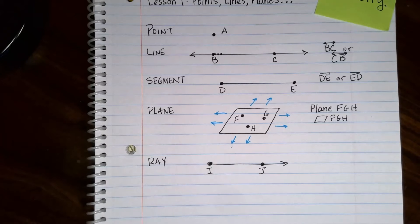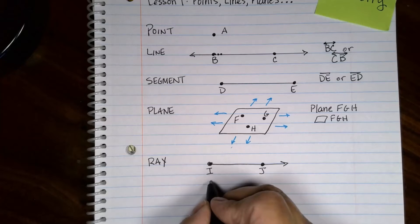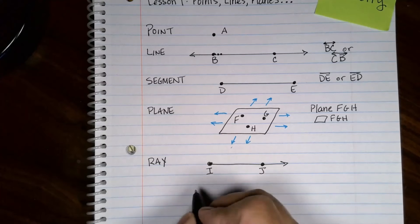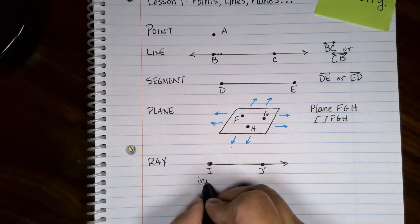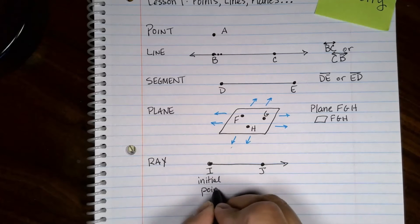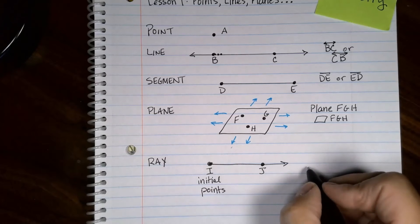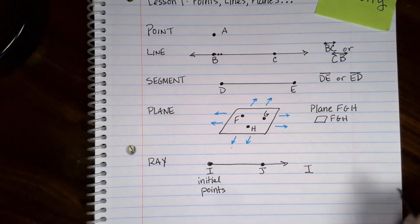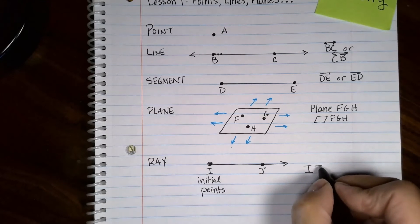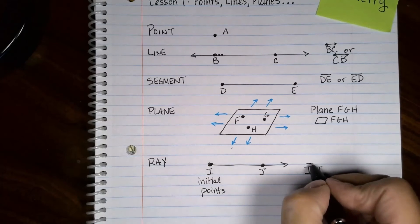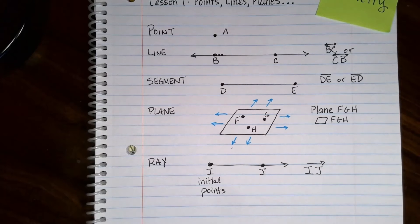Naming them is very specific. We have to start with this one, which is called the initial point. The fact that I have an I here is just a coincidence. This is called the initial point. It's where the ray starts. When you name them, you have to put that letter first and then the second one that it goes through is this letter. The little icon you put on there is just a tiny little ray.